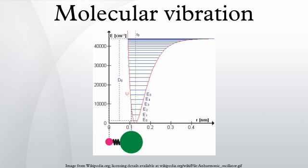In a rocking, wagging or twisting coordinate the bond lengths within the groups involved do not change. The angles do.